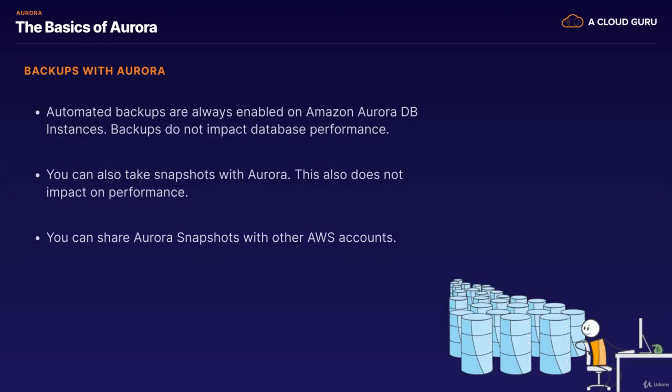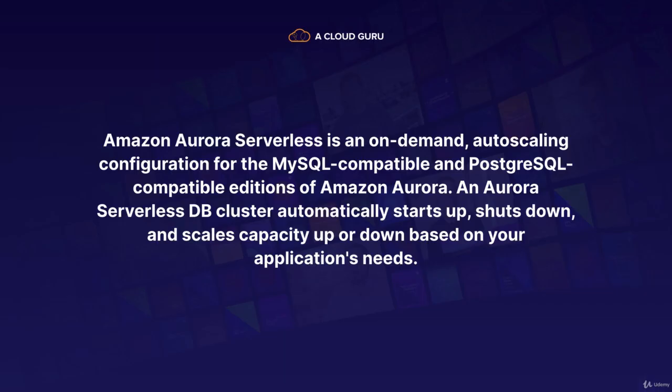Moving on to backups with Aurora: automated backups are always enabled on Amazon Aurora database instances, and backups do not impact database performance. You can also take snapshots with Aurora — this does not impact on performance, and you can share Aurora snapshots with other AWS accounts.